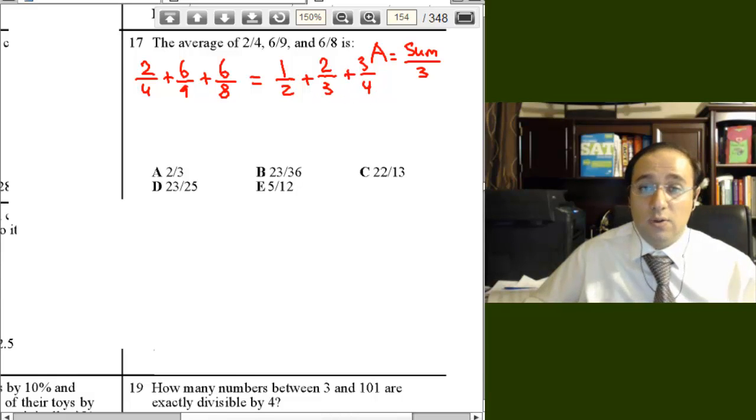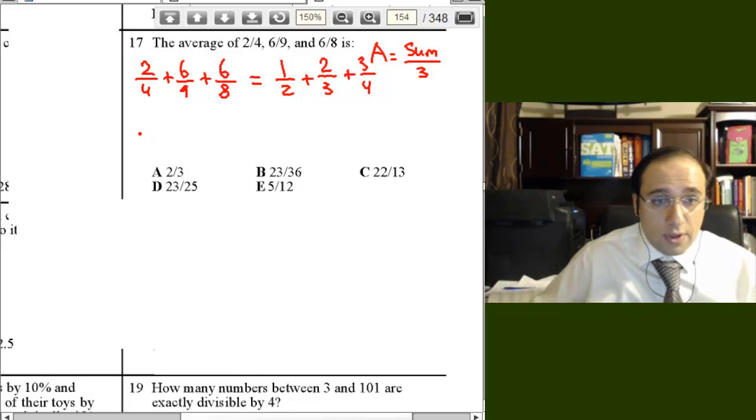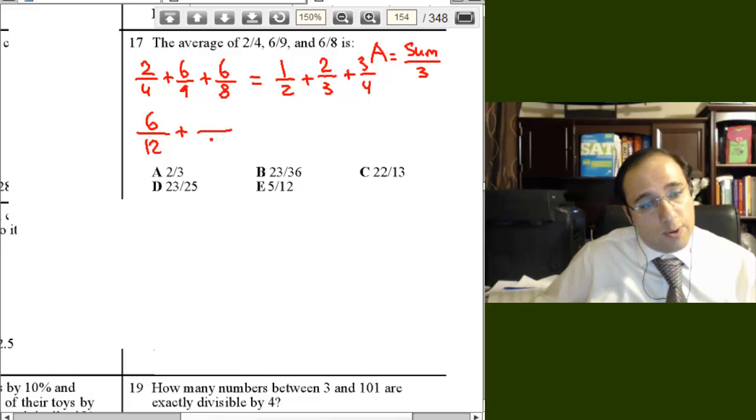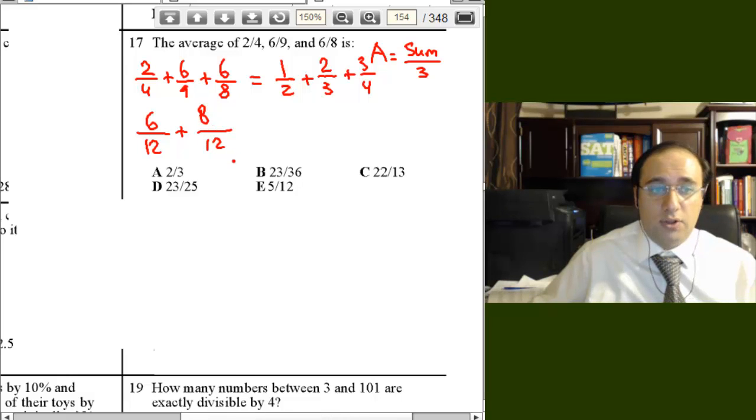Now the LCD or the LCM for 2, 3, and 4 is 12. So we get 1 half is 6 over 12, 2 thirds is 8 over 12, right, because I multiply by 4, and 3 fourths is 9 over 12.